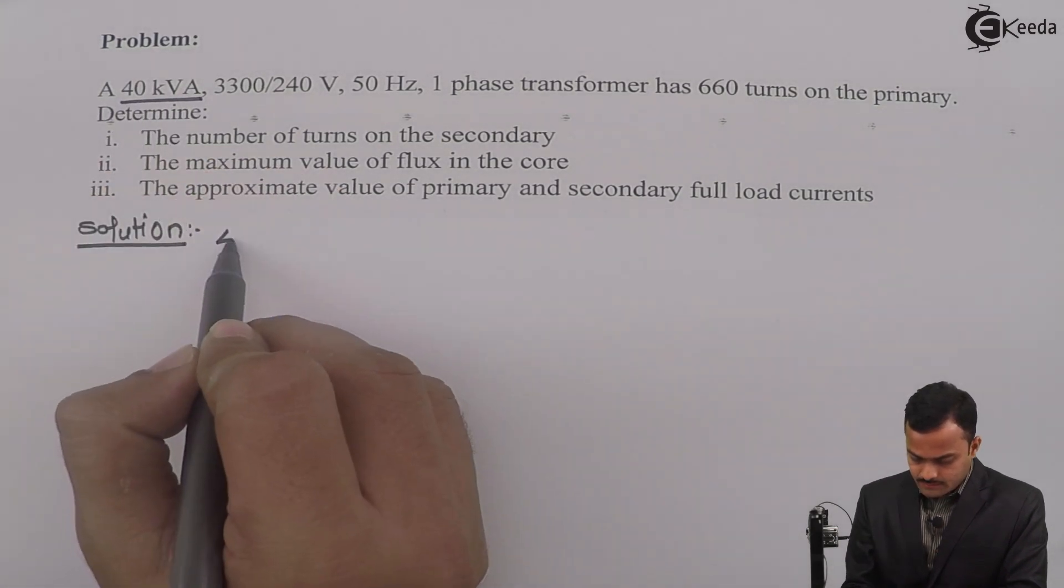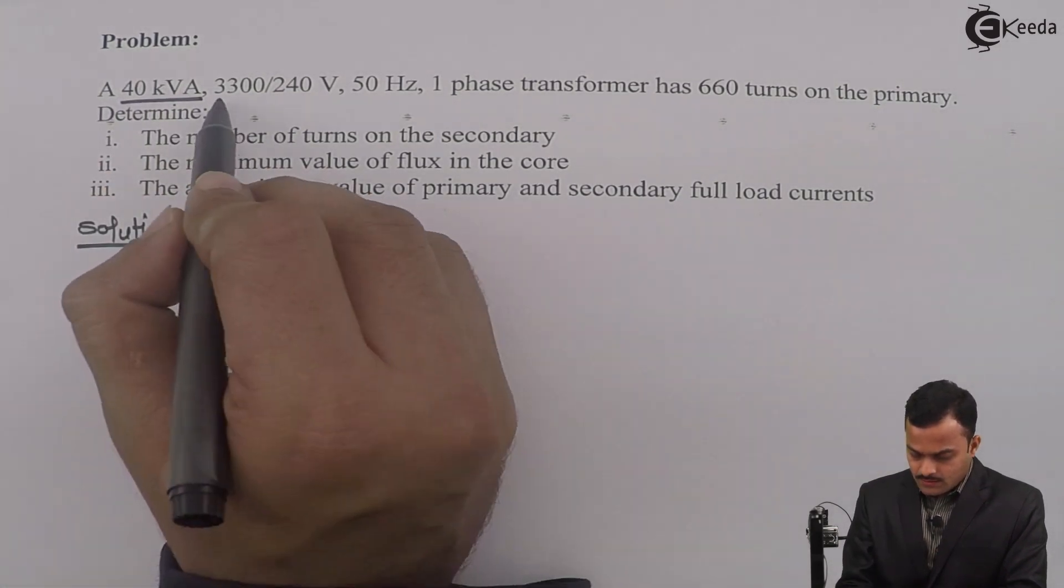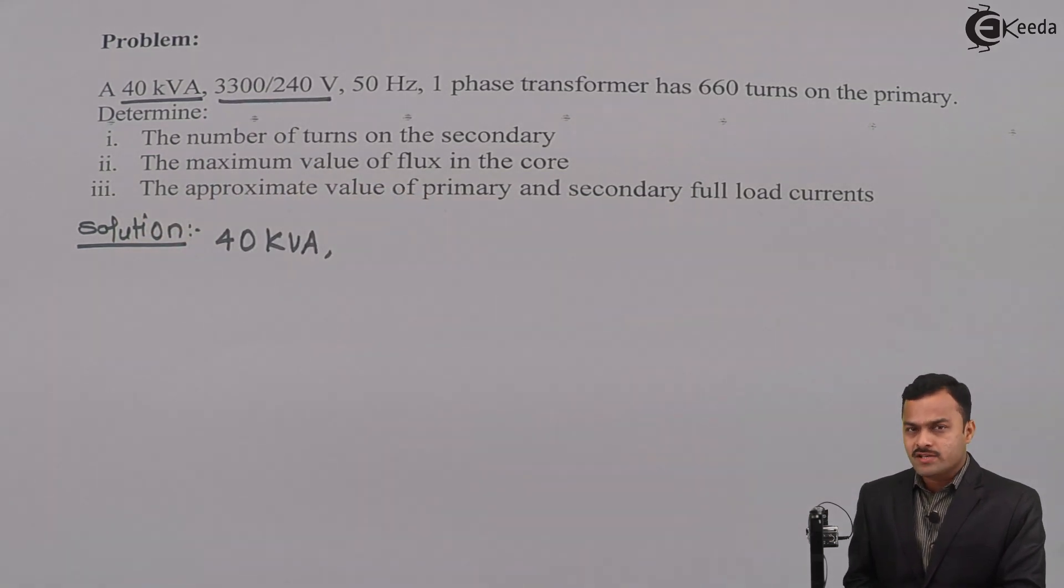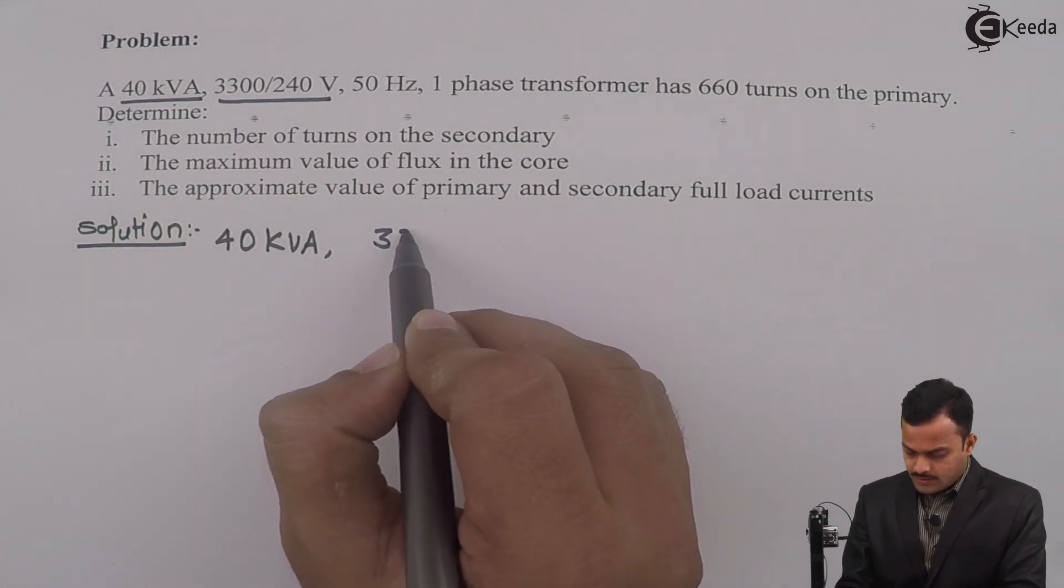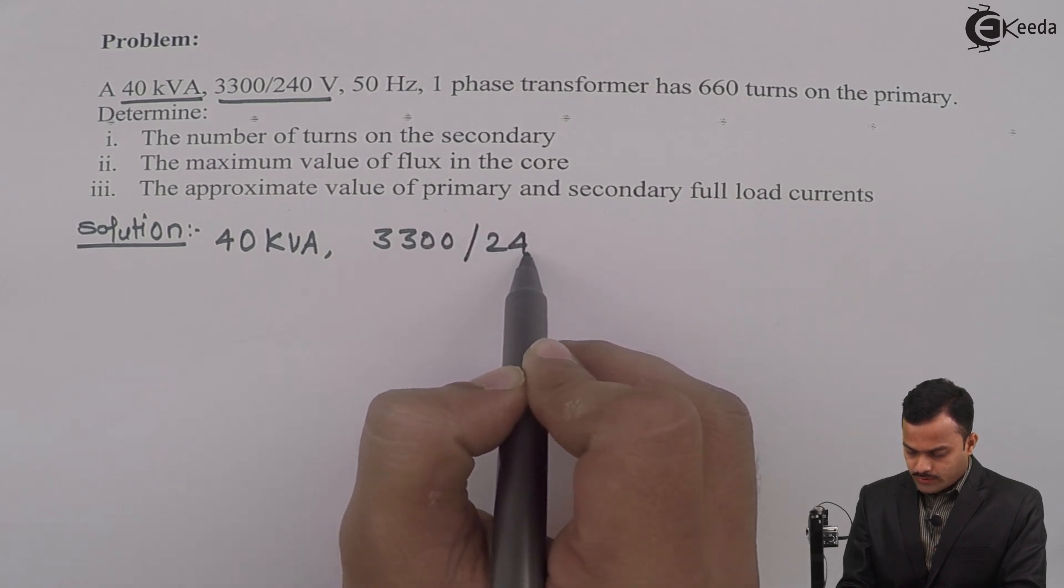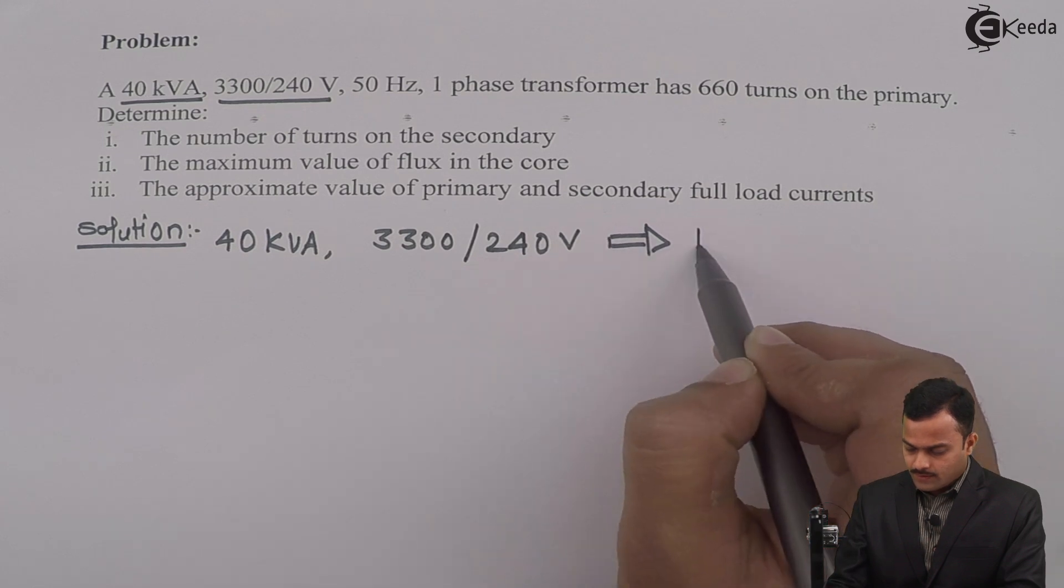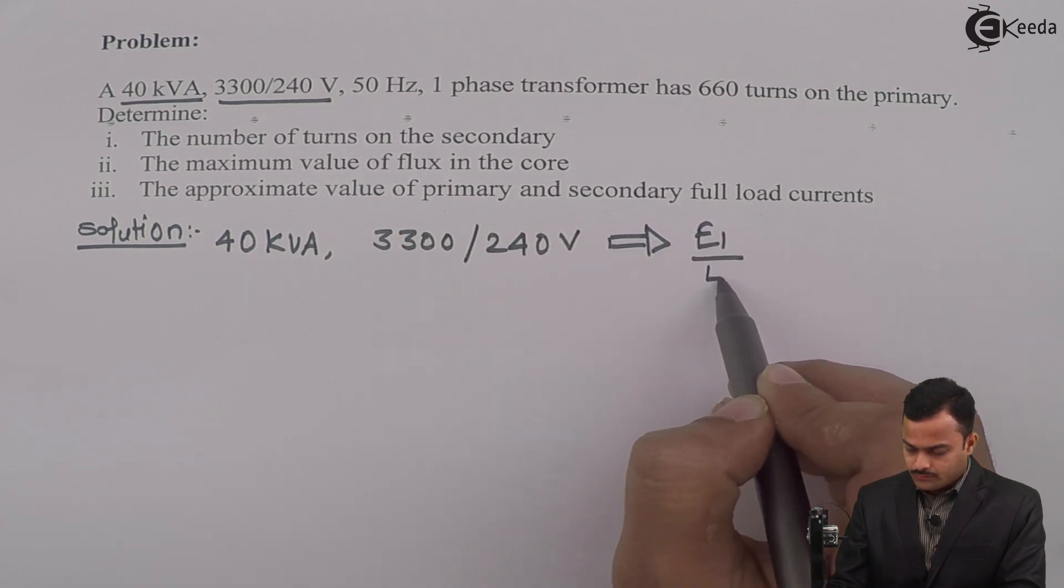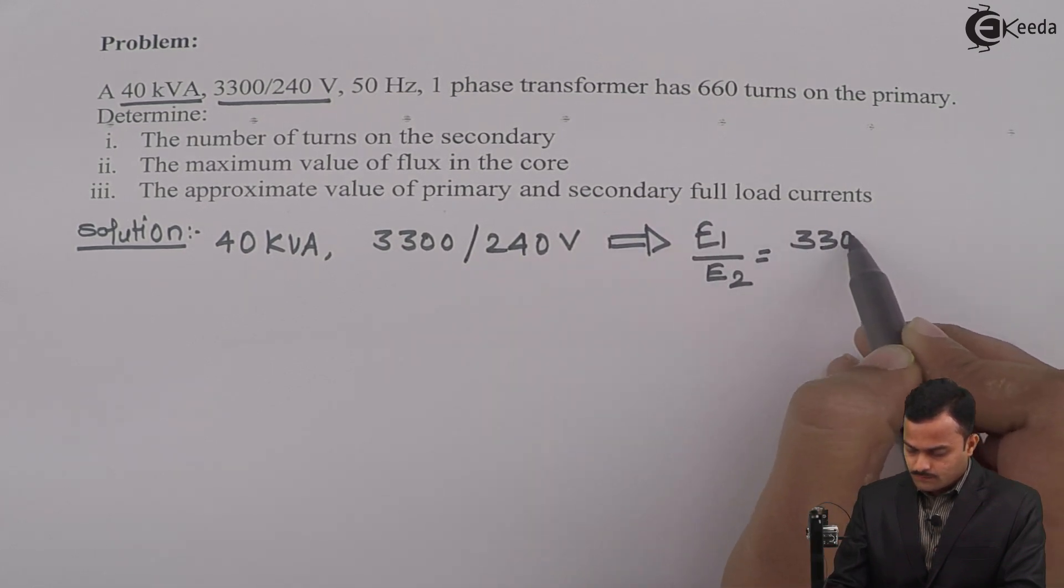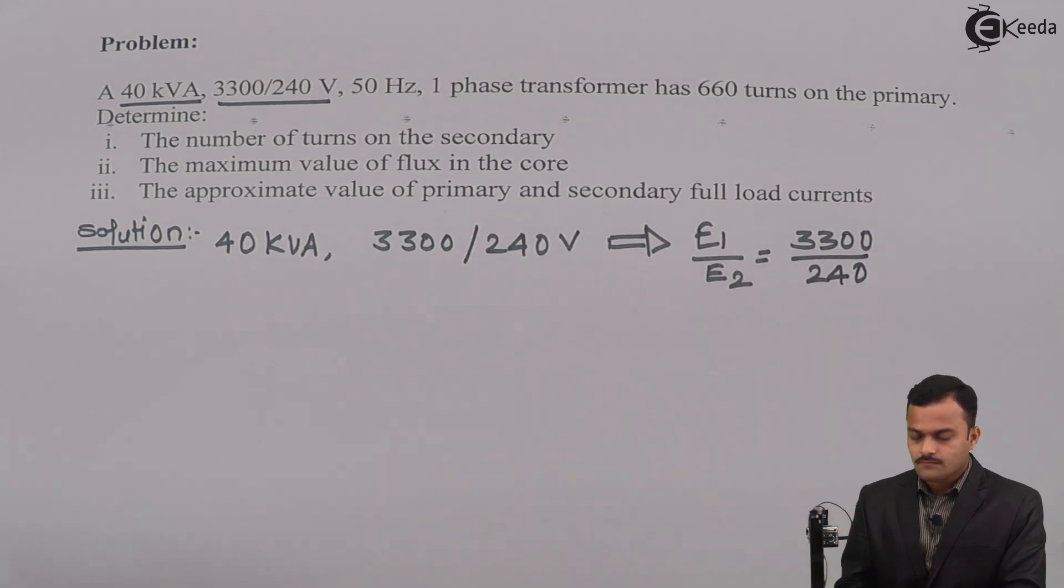40 kVA transformer. Its EMF ratio is given, 3300 slash 240 volt. So this is nothing but E1 upon E2.